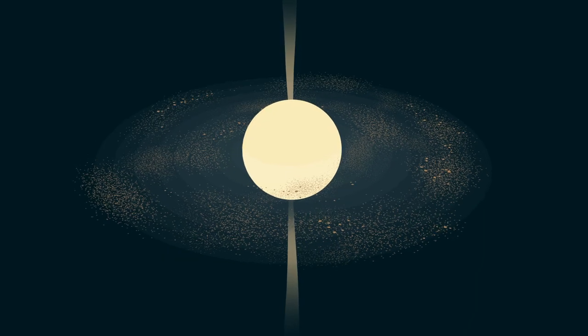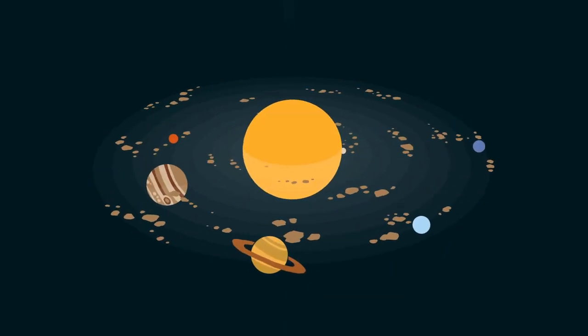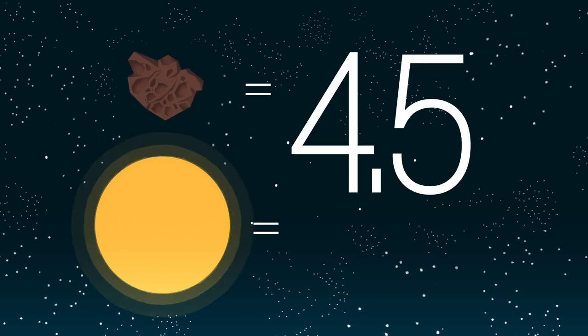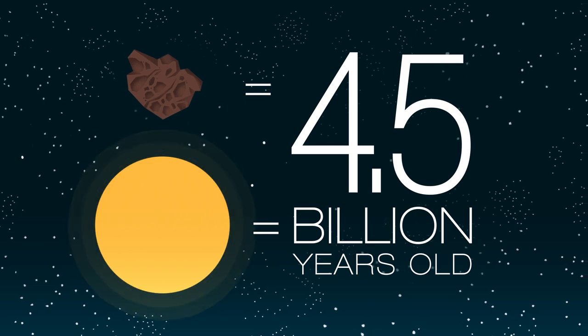Well, the Earth, the planets, comets and moons all formed at the same time as the Sun. So, space rock rubidium tells us the Sun is four and a half billion years old. But what does this number mean?